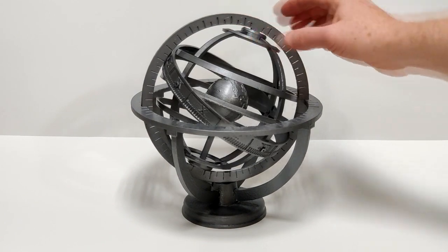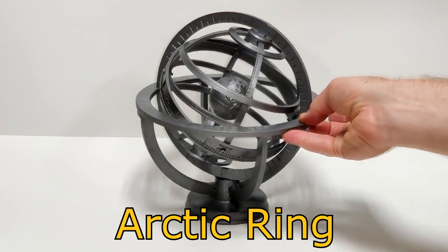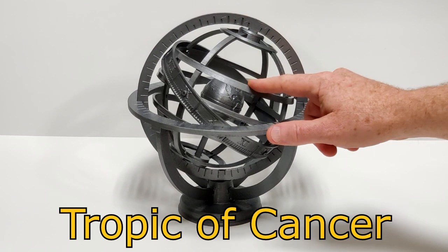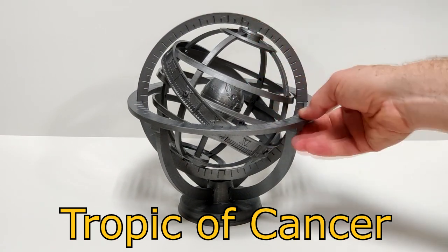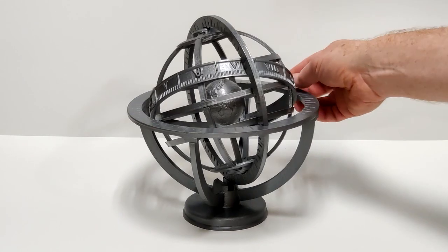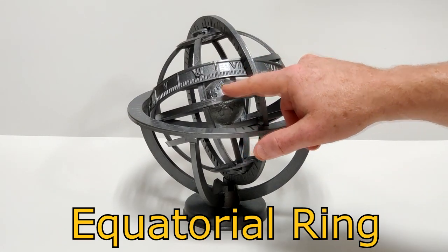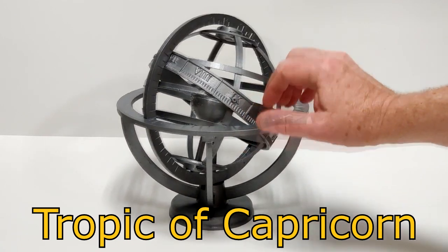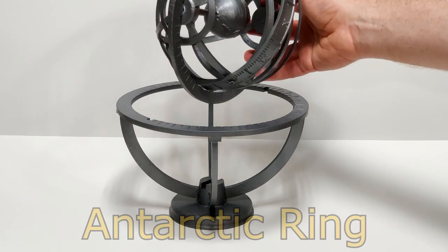The other rings you see here prominently, this top one here is called the arctic ring, the next one down is the tropic of cancer, the next one down is the equatorial ring, then the tropic of capricorn, and at the very bottom is the antarctic ring.